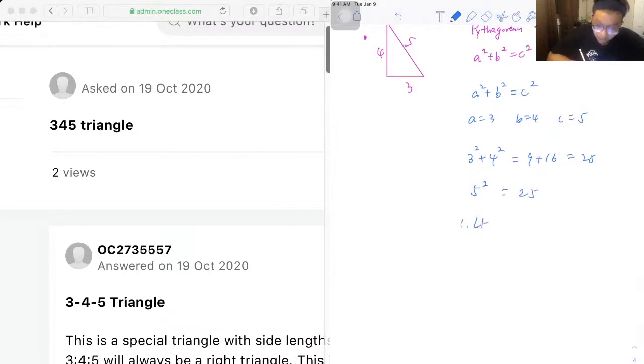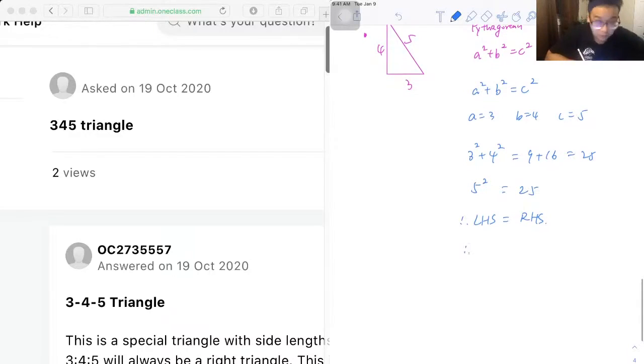So we have our left-hand side equal to our right-hand side. Therefore, 3-4-5 triangles are right triangles.